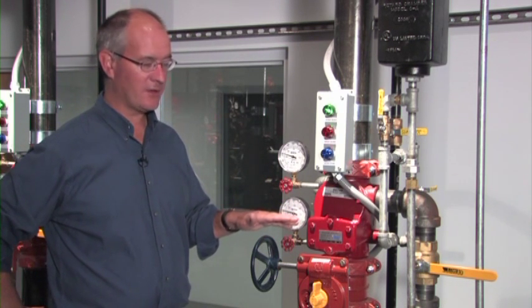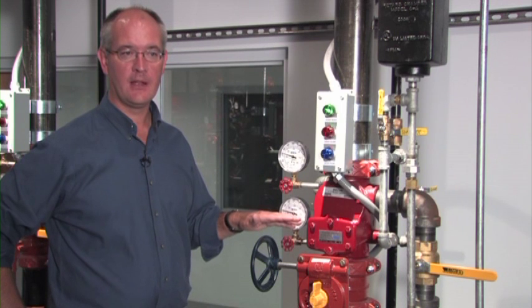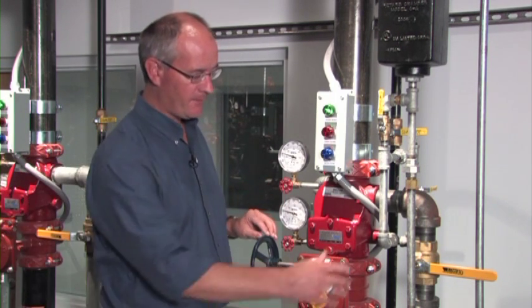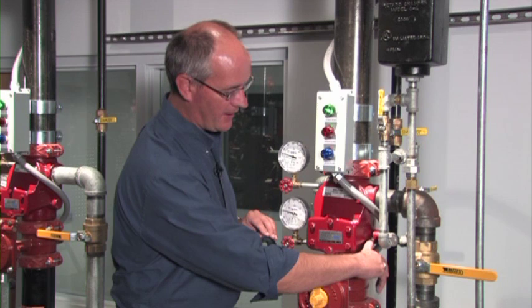The alarm check valve allows for one other function, and that's to create a mechanical alarm through water flow. It does that once water flow is established through the riser. The alarm valve clapper opens up, there's ports in the seat which are open,